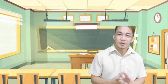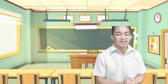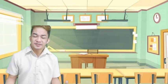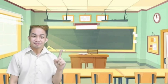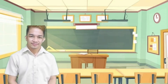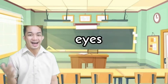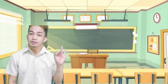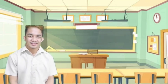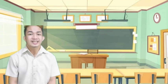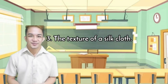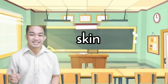So those are the five senses of the human body and the functions of each sense organ. Now kids, tell me which sense organ you will use to describe the following. Number one: The height of a building — your eyes. Number two: The taste of ampalaya — your tongue. Number three: The texture of a silk cloth — the skin.